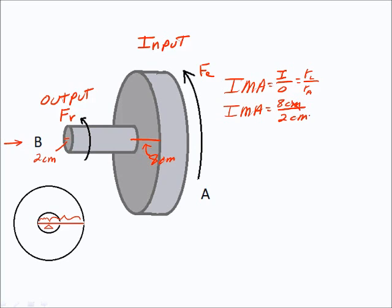The centimeters factor out because this is just a ratio. It's just going to be a number, and the number is four. So what we can see is that if we actually used this wheel and axle,